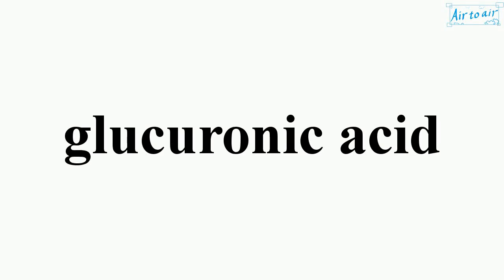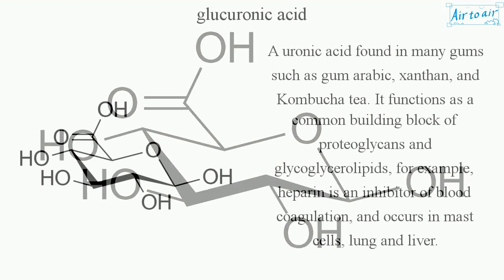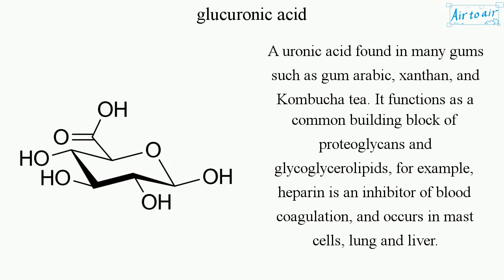Glucuronic Acid is found in many gums such as gum arabic, xanthan, and kombucha tea. It functions as a common building block of proteoglycans and glycoglycerolipids. For example, heparin is an inhibitor of blood coagulation and occurs in mast cells, lung, and liver.